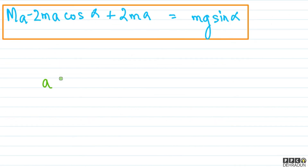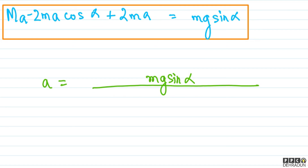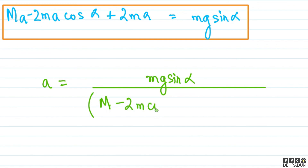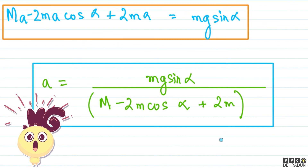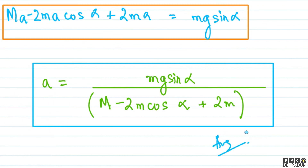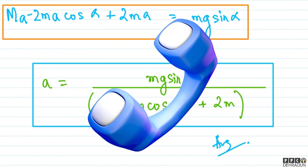तो 2MA minus 2mA cos alpha = mg sin alpha। यानी acceleration A = mg sin alpha divided by (M + 2m minus 2m cos alpha)। यही हमारा final answer है। तो बच्चों, I hope कि आपको यह solution अच्छे से समझ आया होगा। फिर भी अगर कहीं कोई doubt रहे तो feel free to contact me — I'll be very happy to help you. Take care, bye bye।